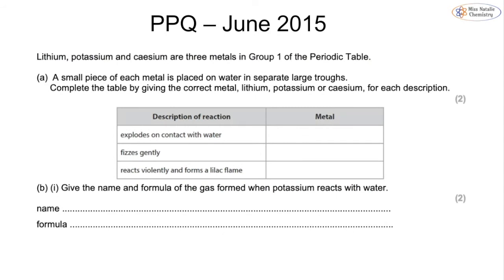Let's look at a past paper question for this topic — from the June 2015 paper. Lithium, potassium, and cesium are three metals in group one of the periodic table. A small piece of each metal is placed on water in separate large troughs. We need to complete the table by matching each metal to its description: explodes on contact with water; fizzes gently or reacts violently; and forms a lilac flame.